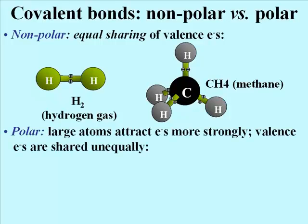In water, the oxygen atom is much larger than the hydrogen atoms. Oxygen's larger nucleus thus draws the electrons from the hydrogen atoms more closely to its nucleus. The result is the oxygen acquires a partial negative charge. Each hydrogen, left with only its proton, has a partial positive charge.